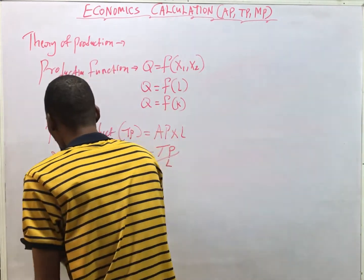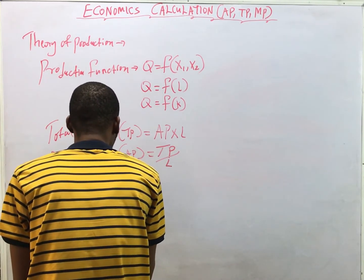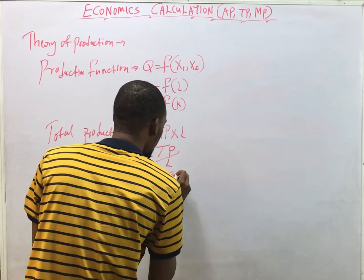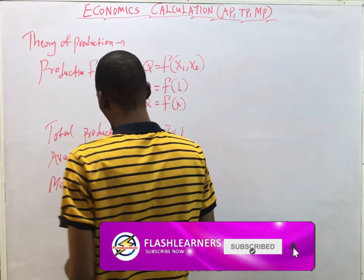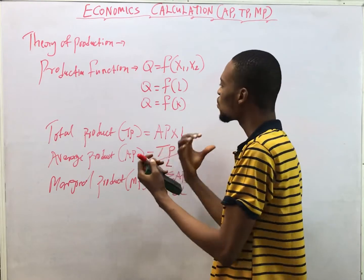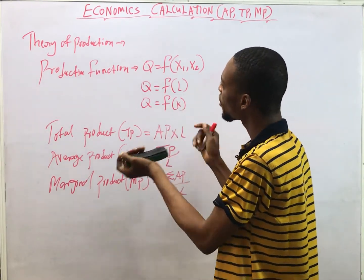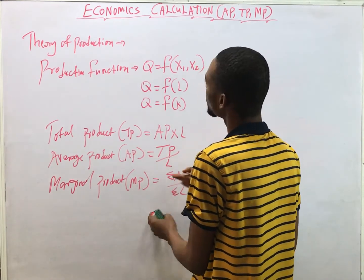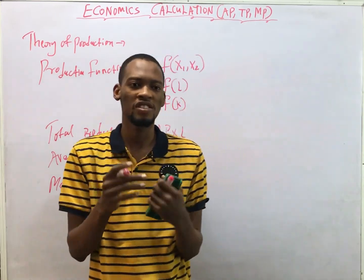That's what marginal product talks about. MP equals change in total product over change in labor. You vary the factors of production to see what the result will be. That's the introduction to the theory of production. Now we have these formulas, so let's solve questions on the theory of production.